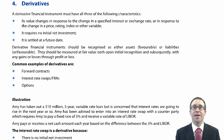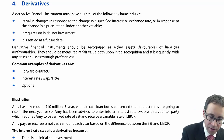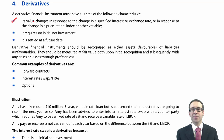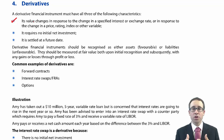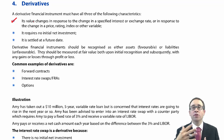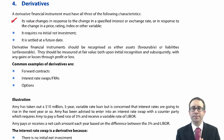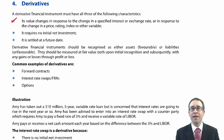In order for a derivative to be classified as a derivative, it needs to have three characteristics. The first is that its fair value will change based upon the value of an underlying item. An underlying item can be anything such as interest rates, commodity prices, or exchange rates. As exchange rates fluctuate and commodity prices go up and down, you may pay more or less for goods contracted under this financial instrument.